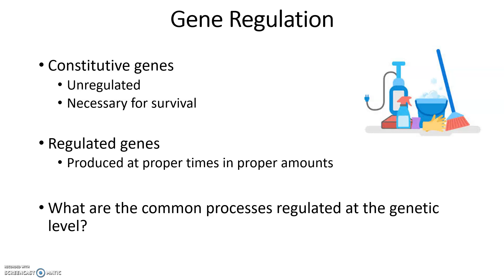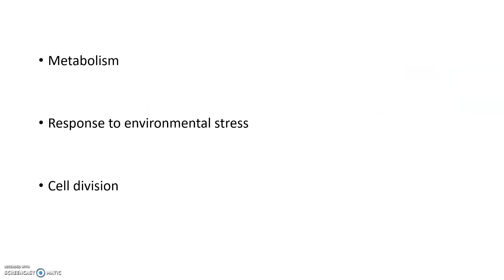When do we make these genes? How do we stop making those genes? Some common processes regulated at the genetic level include genes involved in metabolism — some proteins function in the metabolism of small molecules, so we only need to make those enzymes when those molecules are present. Some are in response to environmental stress — if we enter conditions like heat shock or osmotic shock, then we need to make proteins to help us deal with that.